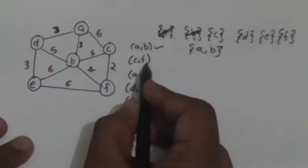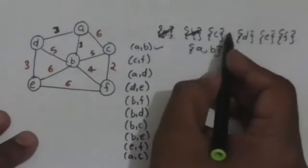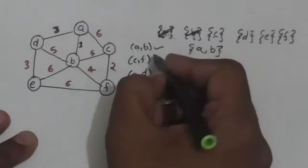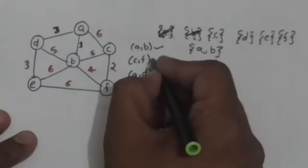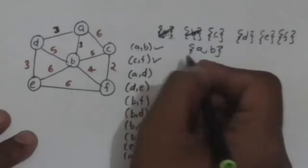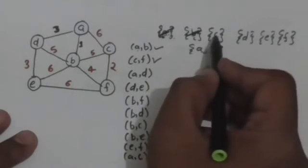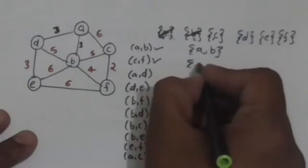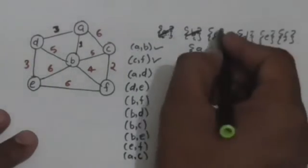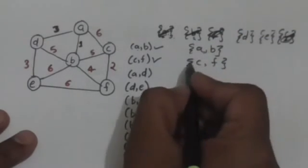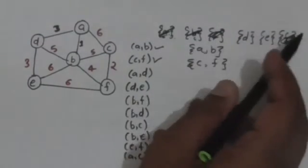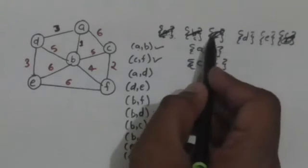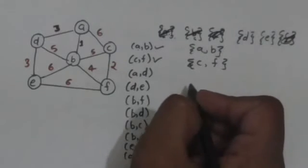The next edge is CF. Vertex C and vertex F are both in different sets, so we will select this edge to include in the minimum spanning tree and we will unite the sets containing vertex C and vertex F. This new set is the union of the set containing vertex C and the set containing vertex F.